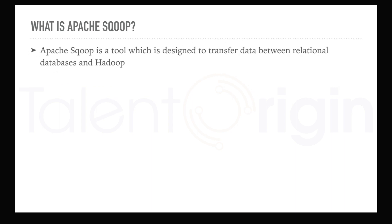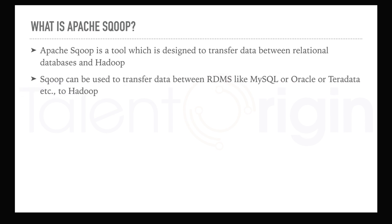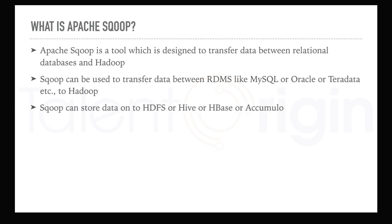So what is Apache Sqoop? Sqoop is a tool which is designed to transfer data between RDBMS and Hadoop. An RDBMS database can be anything like MySQL, Oracle, Teradata, or PostgreSQL, etc. From these relational database management systems we can transfer or export data to Hadoop, which has different components like HDFS, Hive, HBase, and many more.